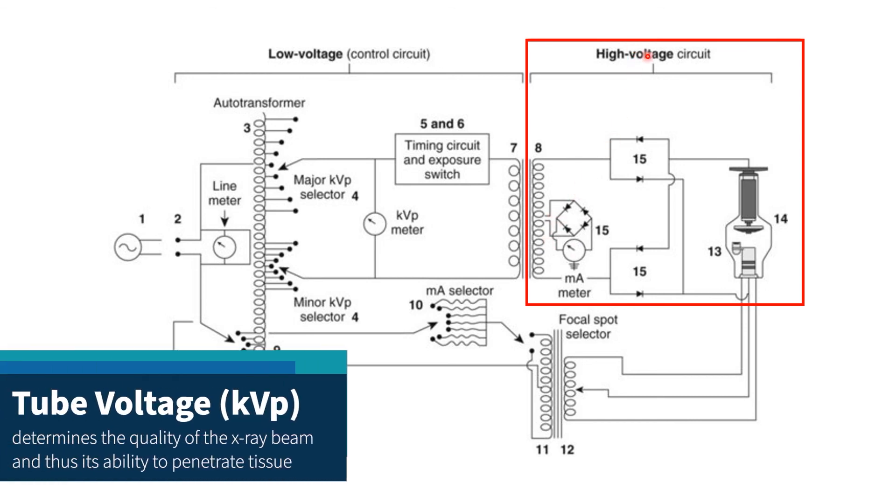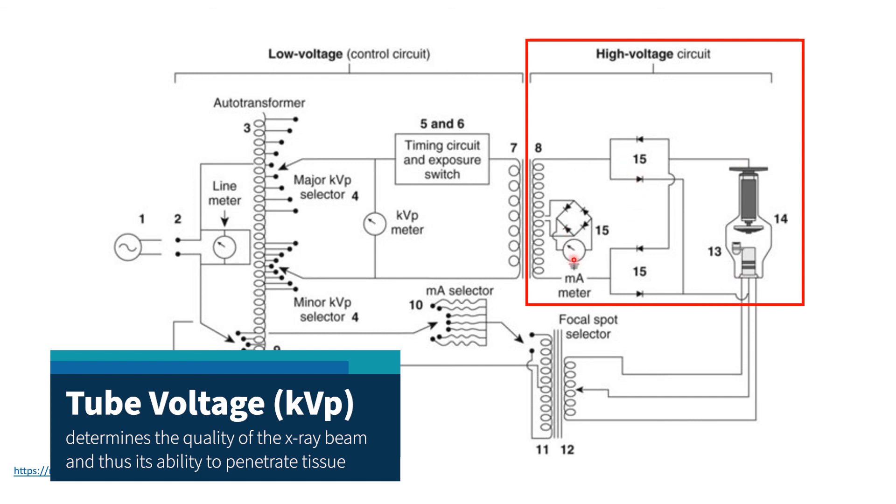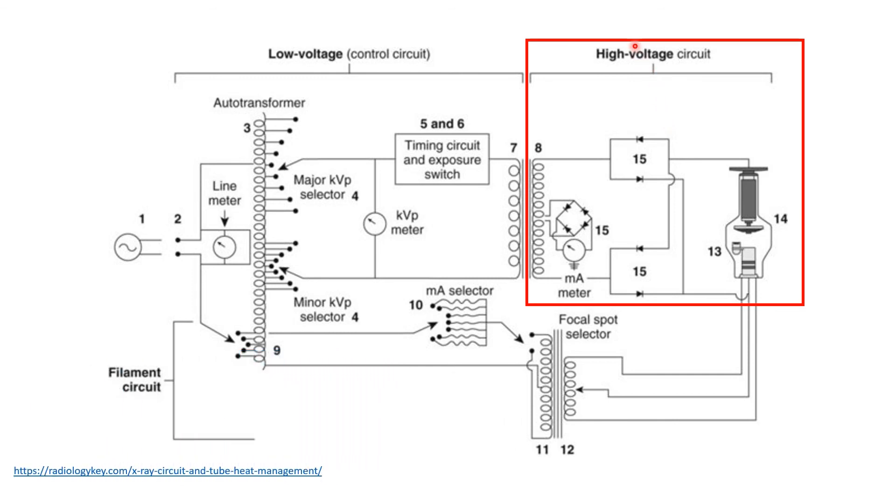We have the X-ray tube here and the rectifier unit. The current flows in the circuit only during an exposure. This is a dangerous circuit because of the very high voltage KV. Thus, high insulation for the cables is needed.